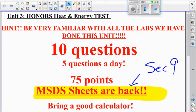Let's talk here. Your test is Thursday and Friday. It is 10 questions, worth 75 points total. We used to make this a one-day test, but we thought it was evil to make you guys try and finish this whole thing in one day, so we spread it across two days.